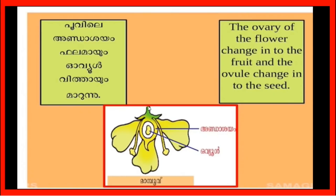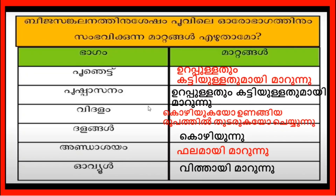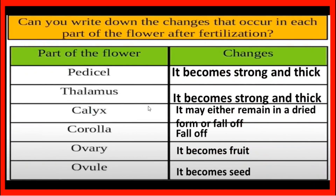The ovule changes into seed and the ovary changes into fruit. Now you have to remember: the ovary wall becomes strong and thick.